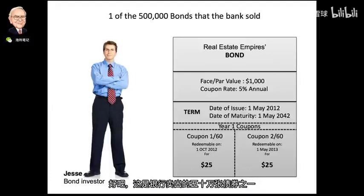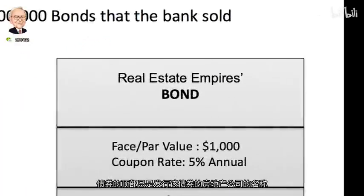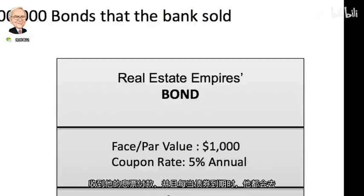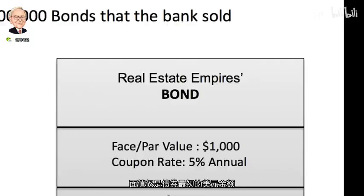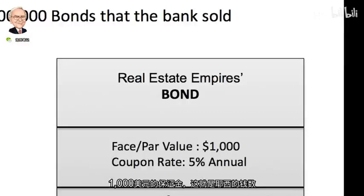Here's one of the five hundred thousand bonds that the bank sold, and it went to an investor named Jesse. At the top of the bond is simply the name of the real estate company that issued the bond — this is the person responsible for ensuring Jesse receives his coupon payments, and also his thousand dollars when the bond matures. The par value, also known as the face value, is the dollar amount the bond was originally issued for, which is a thousand dollars.